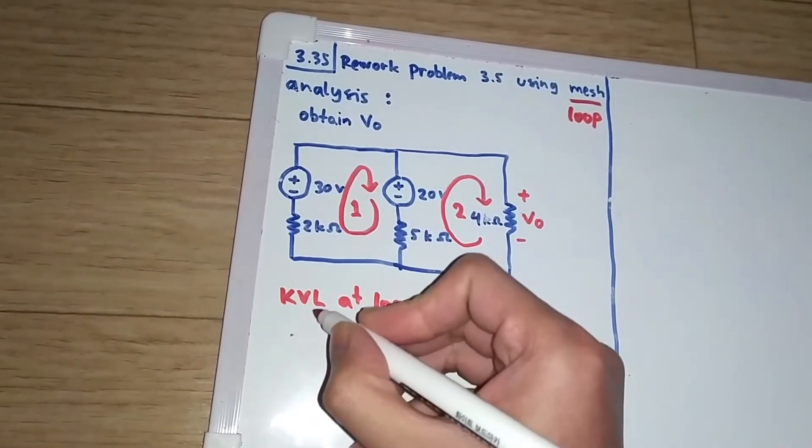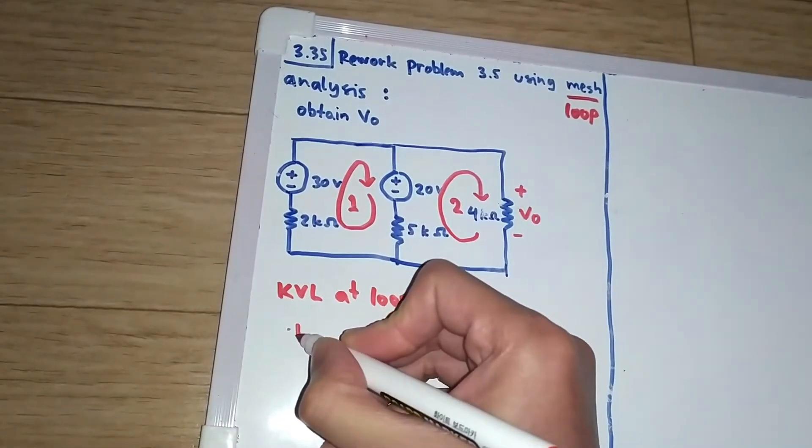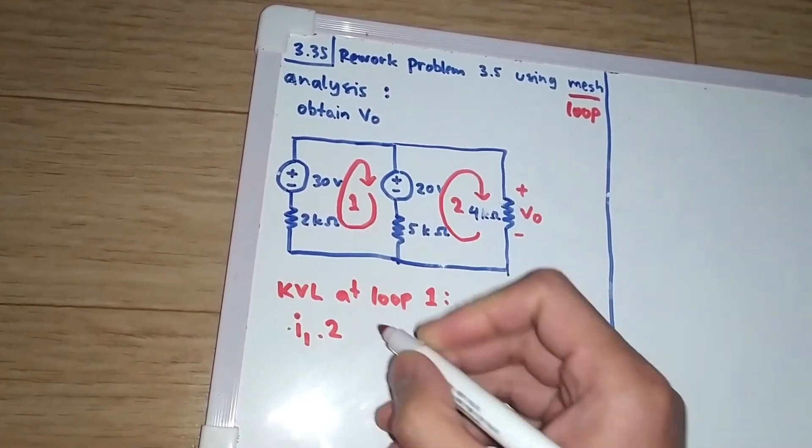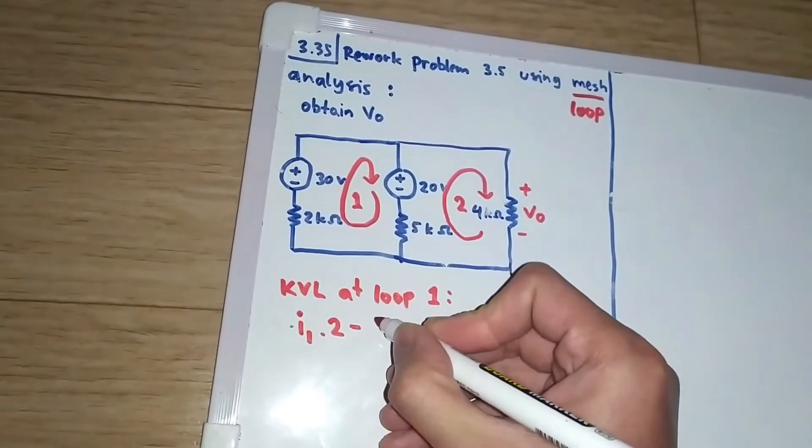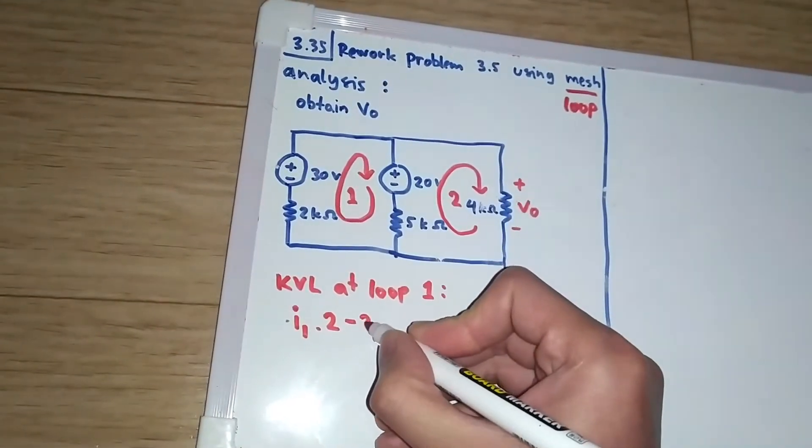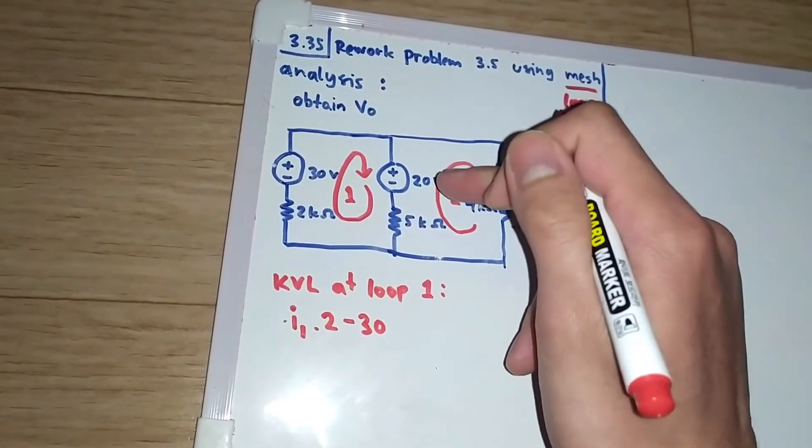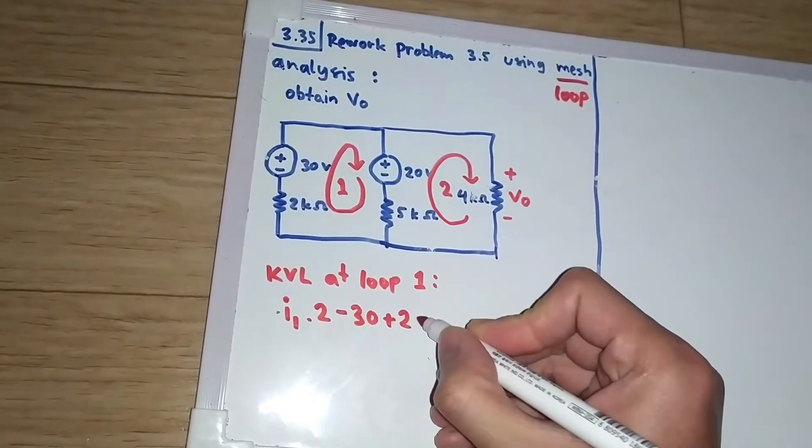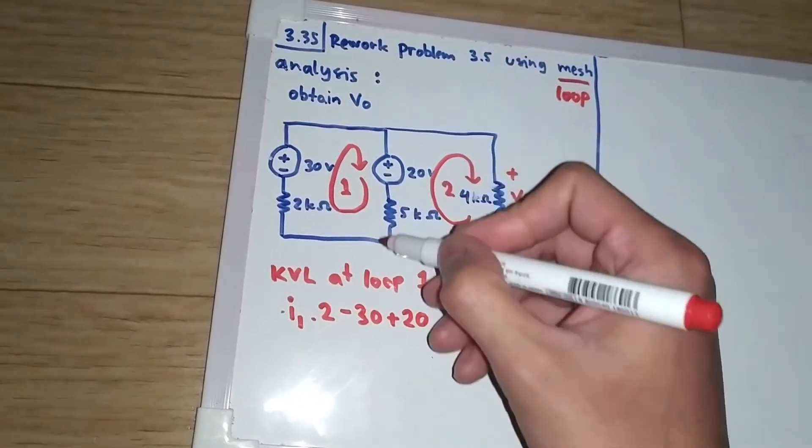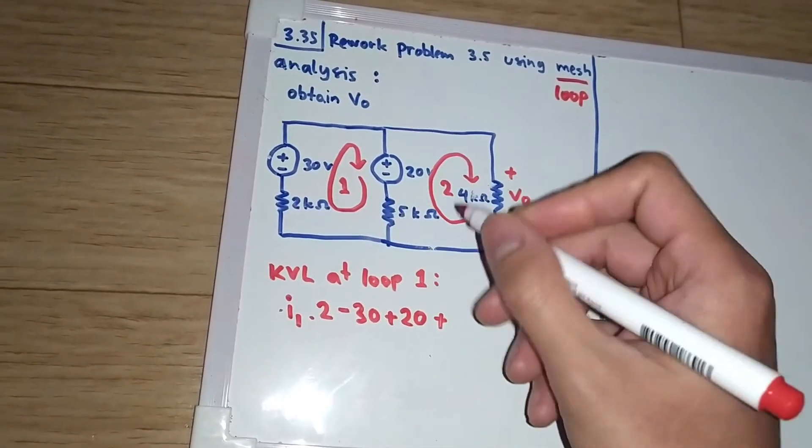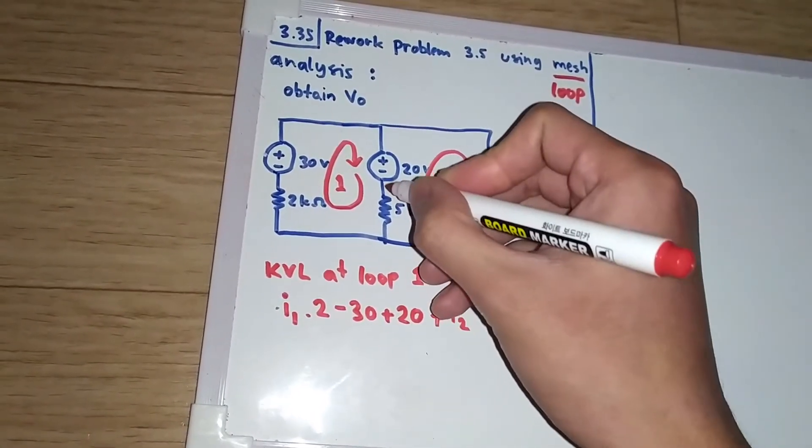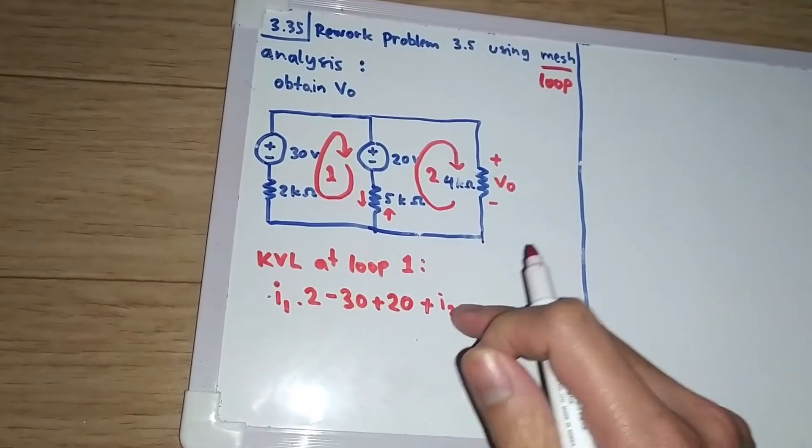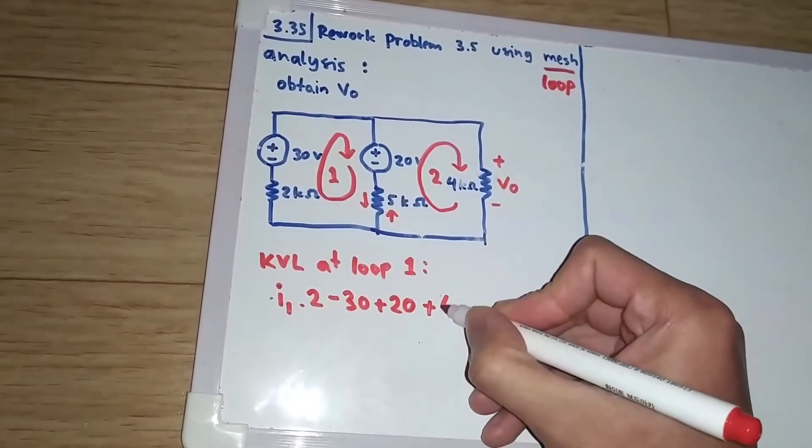The current is going there, and I will assume that the current that goes there is positive. So we will have I1 times 2, so the voltage here is I1 times 2. There is a voltage source there, minus because this is the minus sign, so minus 30. Then we are going to this loop and we have this voltage source again, that's positive, so we found the plus sign here. So we have 20. And the last one, we will have plus again. That is I1, but on this side we have I1 going here, but we will also have I2 going there. So we will have I1 minus I2 times 5 equals 0.